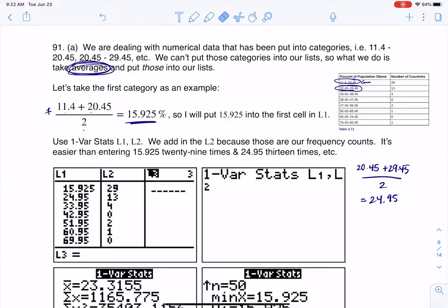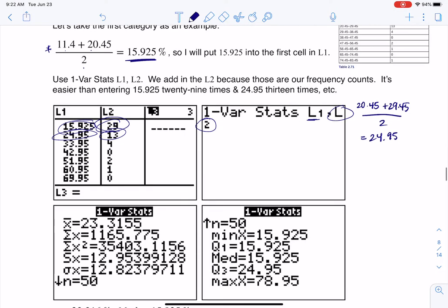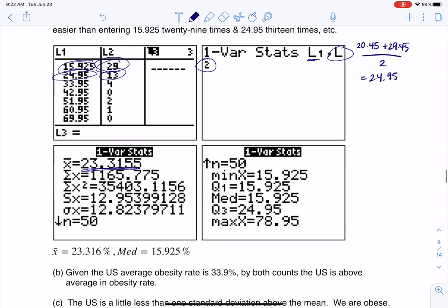Let me clean this up a bit. So after we take those averages, then I go ahead, and because I've got my variable in L1 and the frequencies in L2, I've got to go ahead and say, get me one of our stats off of L1, but take into account L2. Make sure you're saying that there are 29 countries, 29 values of 15.925 and 13 values of 24.95, and find me the average that way. So when I do that, here it comes,